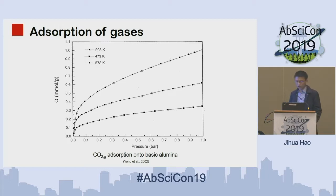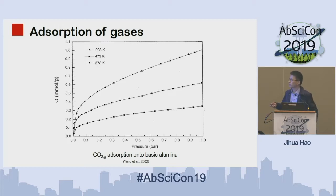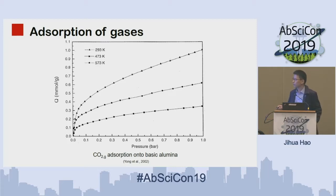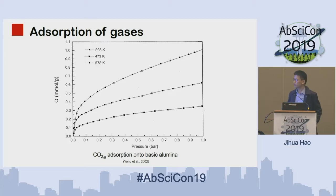Here is one example of the absorption of gas onto the mineral surface. The x-axis is the pressure and y-axis is the amount of gas absorbed, shown for three temperature cases. With the same pressure, increasing temperature will release the gas from the surface — because increasing temperature makes the gas more active and removes it from the mineral surface. Increasing pressure will greatly increase the absorption, because surface absorption of gas is a volume-decrease process.